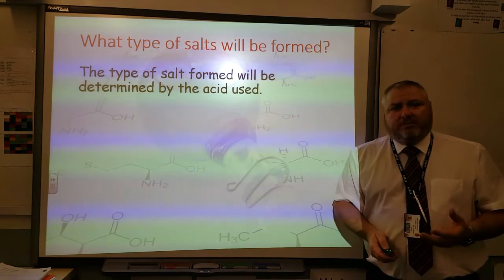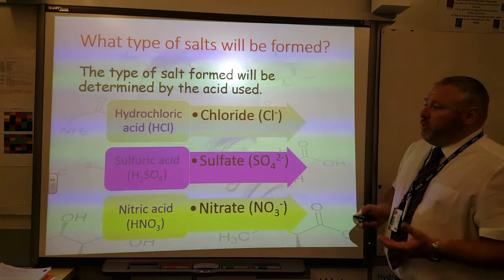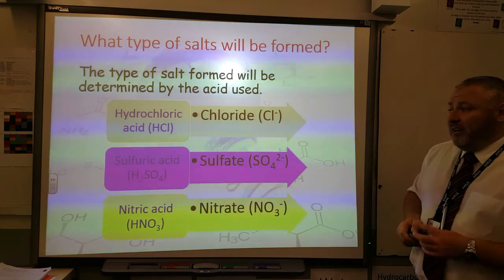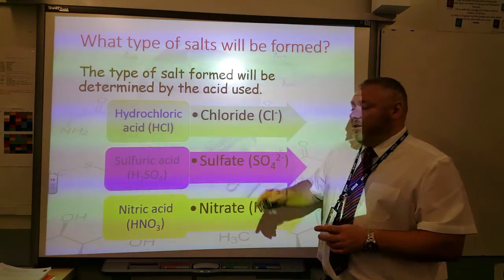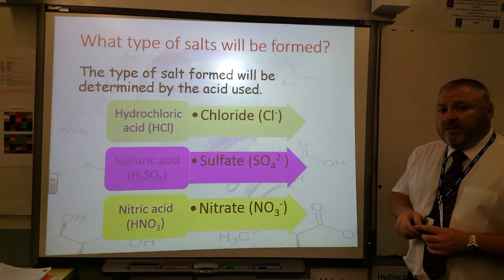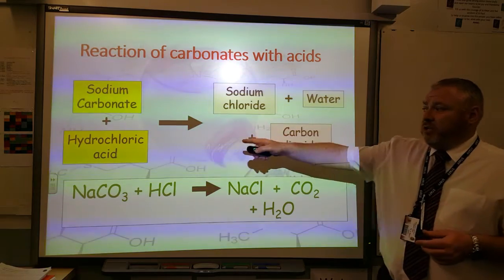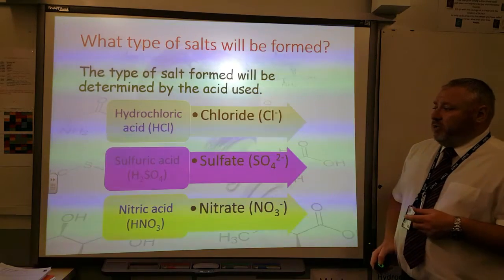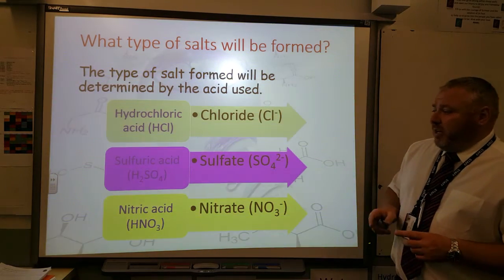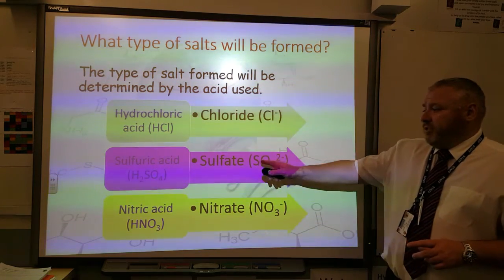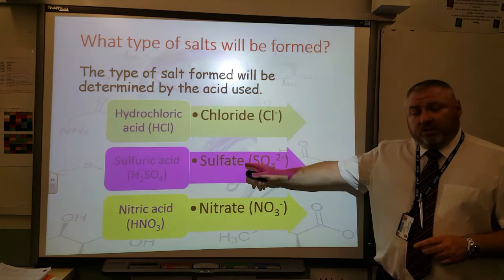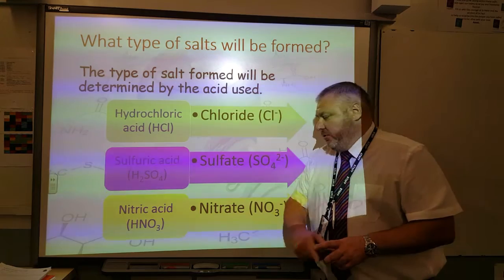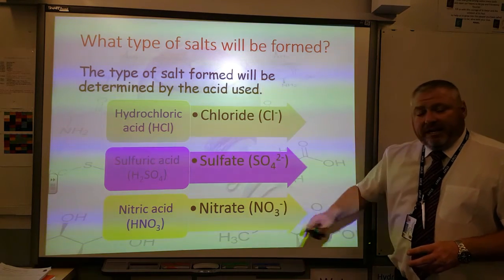So how do we know which type of salt would be formed? To work that out, you only have to remember these three things. If we're using hydrochloric acid, which is HCl, the salt that's formed will always be a chloride — so in the first two examples, we used hydrochloric acid, and that's why the salt formed was sodium chloride. If we use sulfuric acid, which is H₂SO₄, you will always end up making a sulfate. And if you use nitric acid, which has the formula HNO₃, the salt that is formed would be a nitrate.